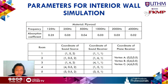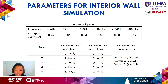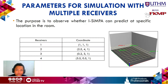This shows the absorption coefficient for plywood. There was a slight change for the sound source: the height was changed from 1 meter in the first simulation to 2 meters. The coordinates for sound receivers and the plane receiver remain the same as the first simulation. Next are the parameters for the simulation with multiple receivers.